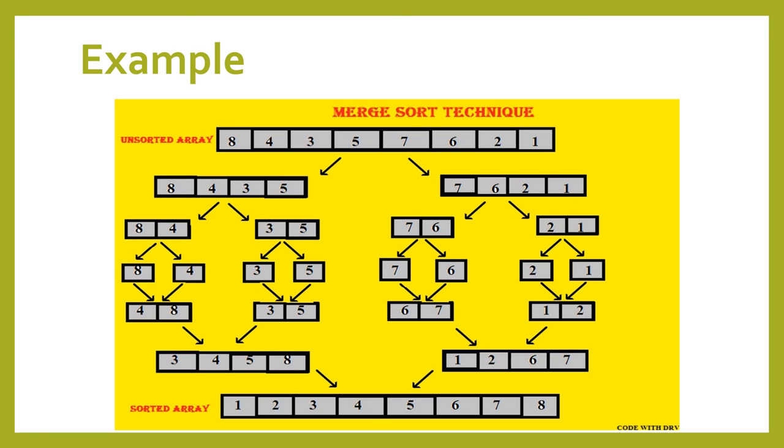Again merge the two arrays into one. After merging, the elements are 3, 4, 5, and 8, and here the elements are 1, 2, 6, and 7.